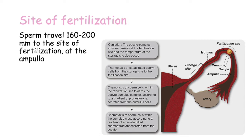The sperm will travel around 116 to 200 millimeters to the site of fertilization at the ampulla. The ampulla is a region of the fallopian tube shown here, and the fertilization site can be quite variable in this area. The egg travels from the ovary to the fertilization site, while the sperm needs to travel much longer.